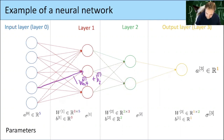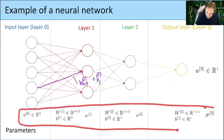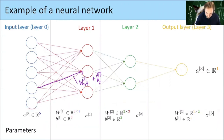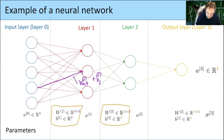The activation functions are fixed from the beginning — they belong to the architecture of our neural network — but the weight matrices and bias vectors are our parameters that we want to find when we train the neural network.